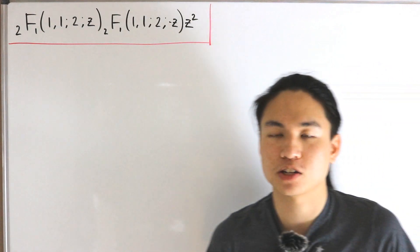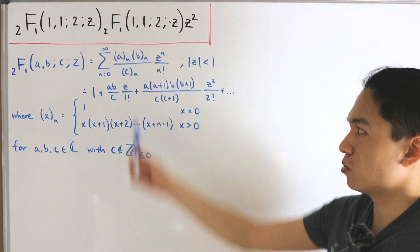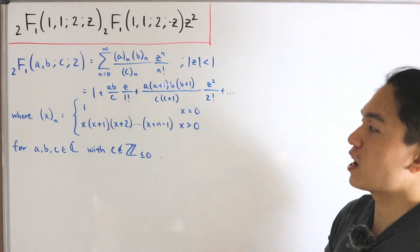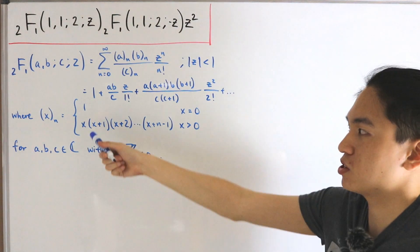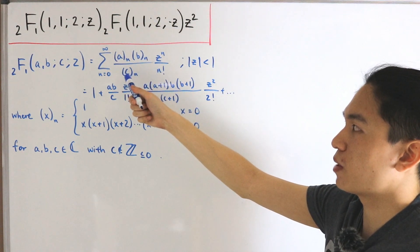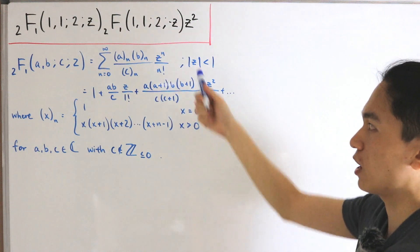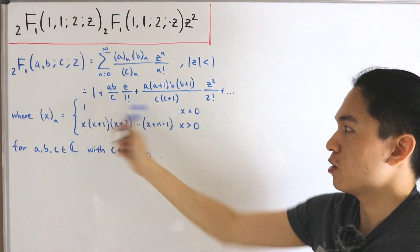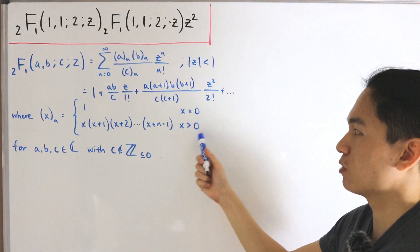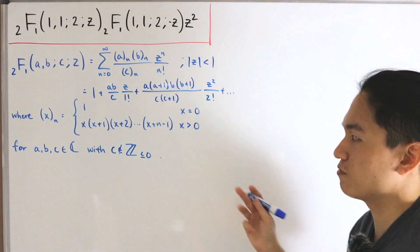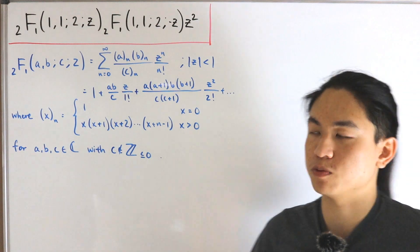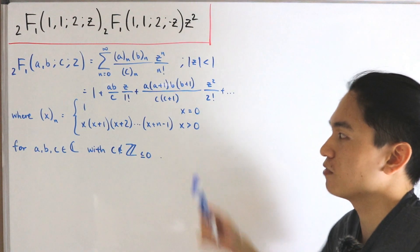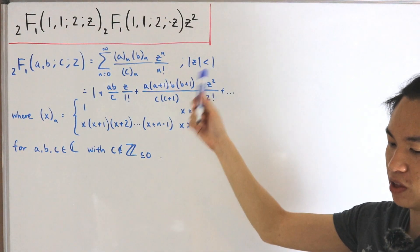The definition states the following: we have the infinite sum from n equal to zero of (a)_n — the rising factorial, commonly written with the Pochhammer symbol — times (b)_n divided by (c)_n, multiplied by z to the power n divided by n factorial, with convergence requiring the absolute value of z strictly less than one. For the rising factorial: when x equals zero it equals one; for x strictly greater than zero, it's x times (x+1) times (x+2) and so on. Note that inputs a, b, c can be complex numbers, but c cannot be a negative integer, otherwise the series diverges.